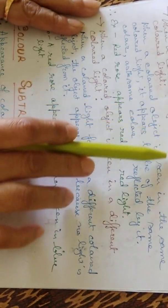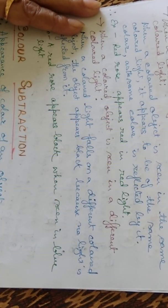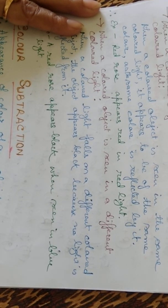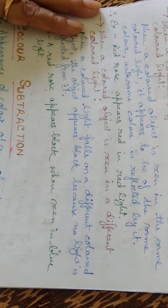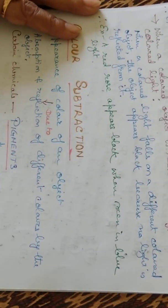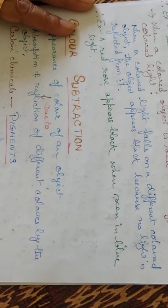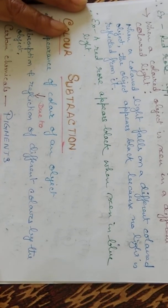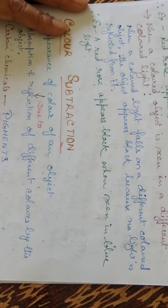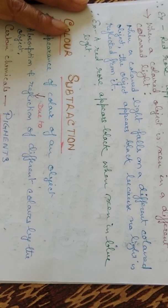Second condition: when a colored object is seen in the same colored light, it appears to be of the same color, as the same color is reflected by it. For example, a red rose appears red in red light. Third condition: when a colored object is seen in a different colored light, the object appears black because no light is reflected from it. For example, a red rose appears black when seen in blue light.